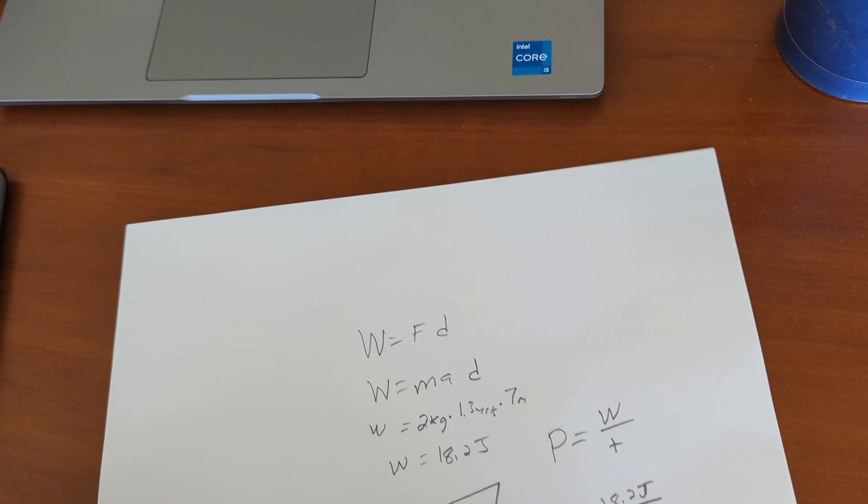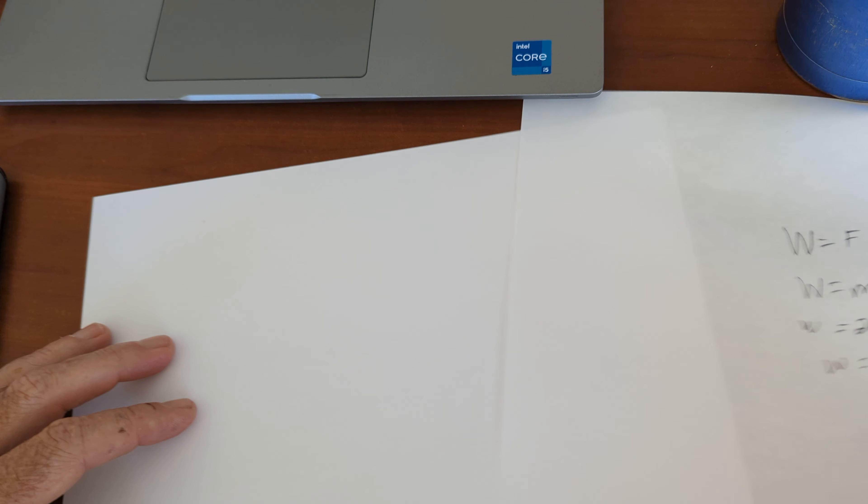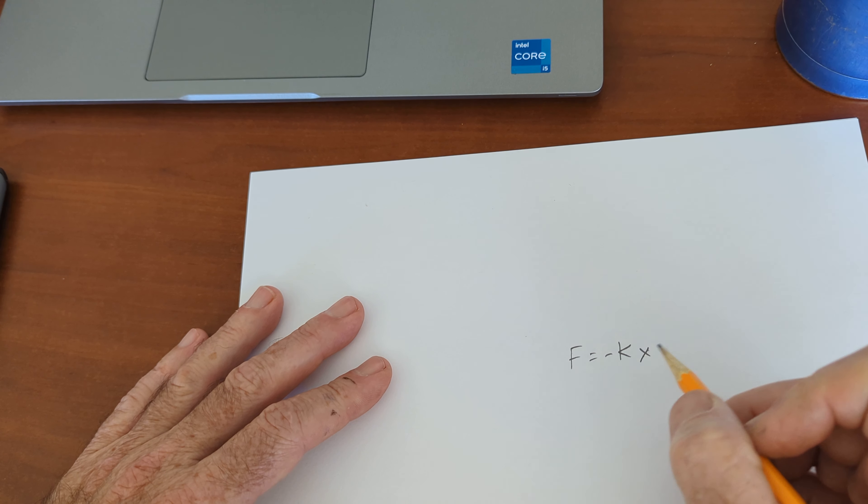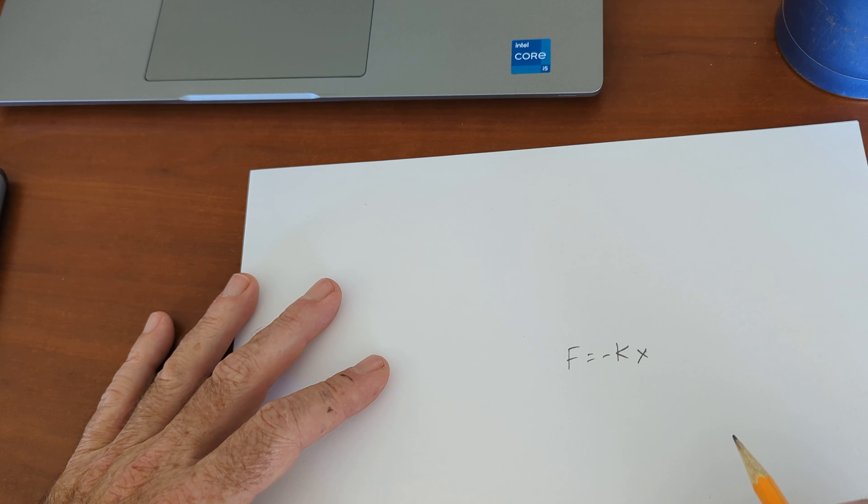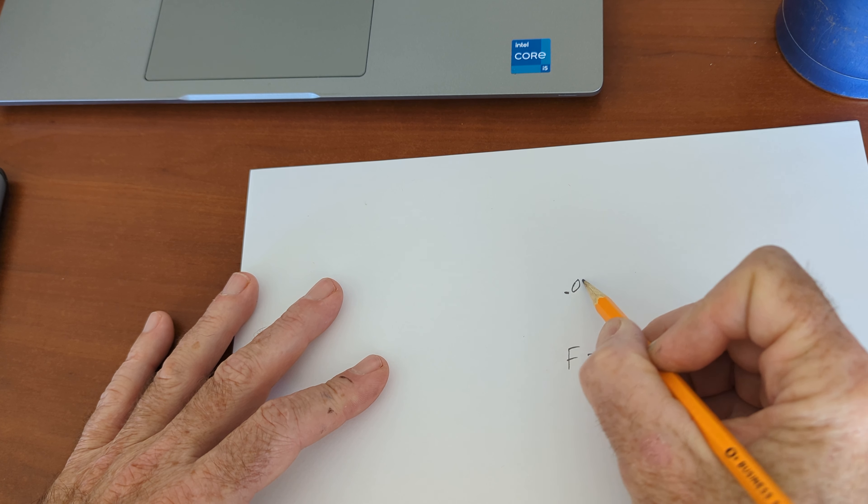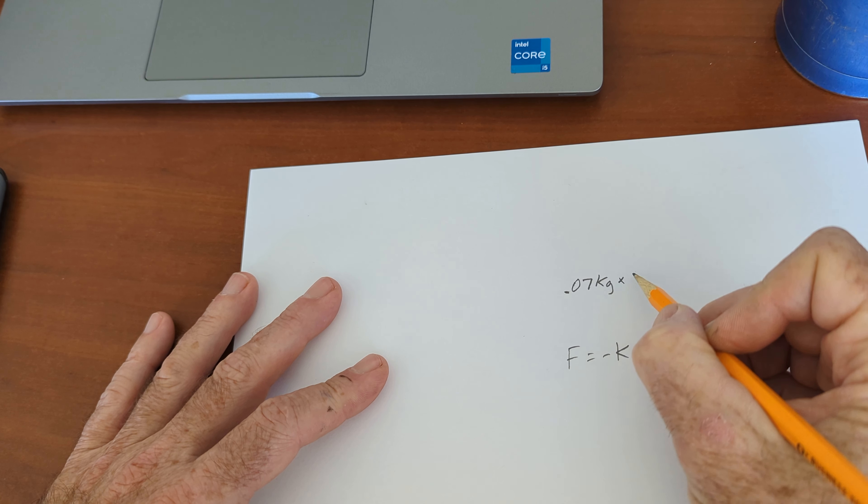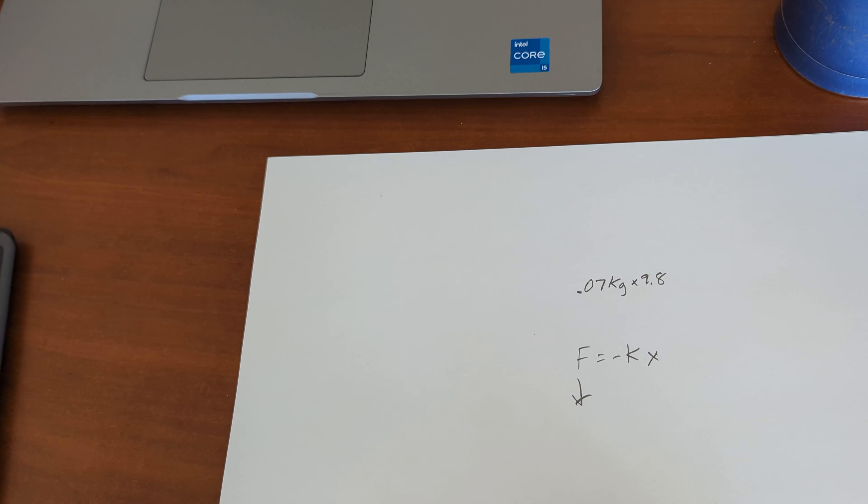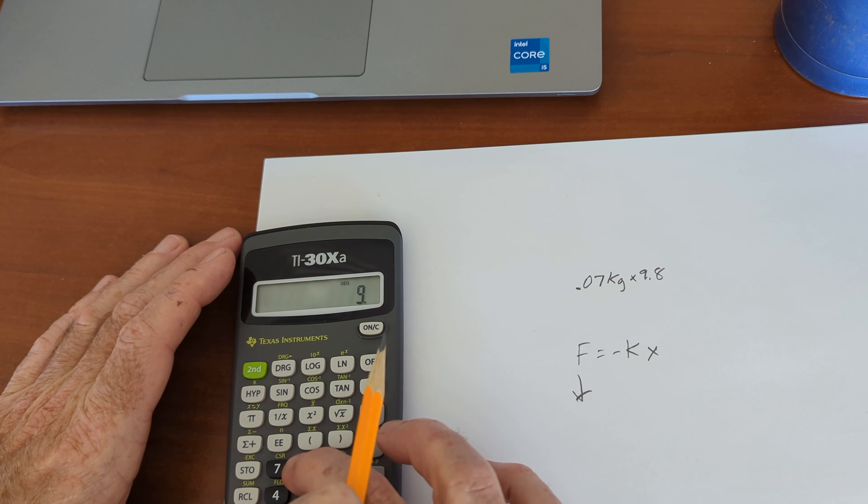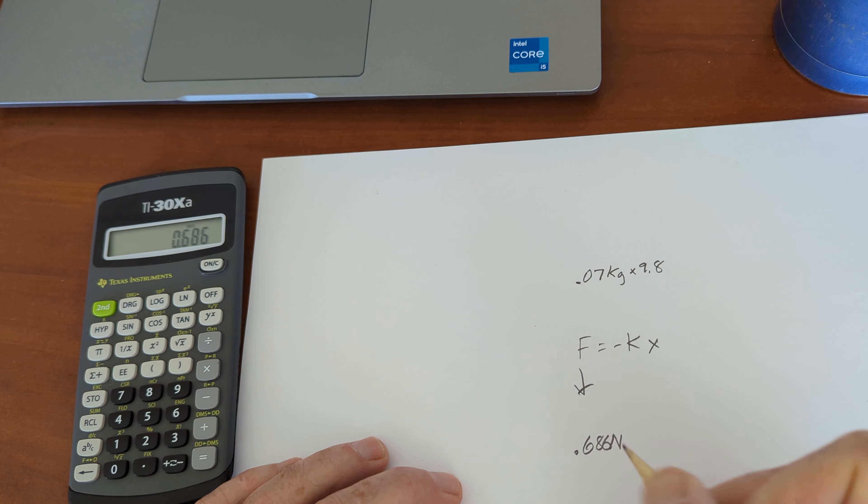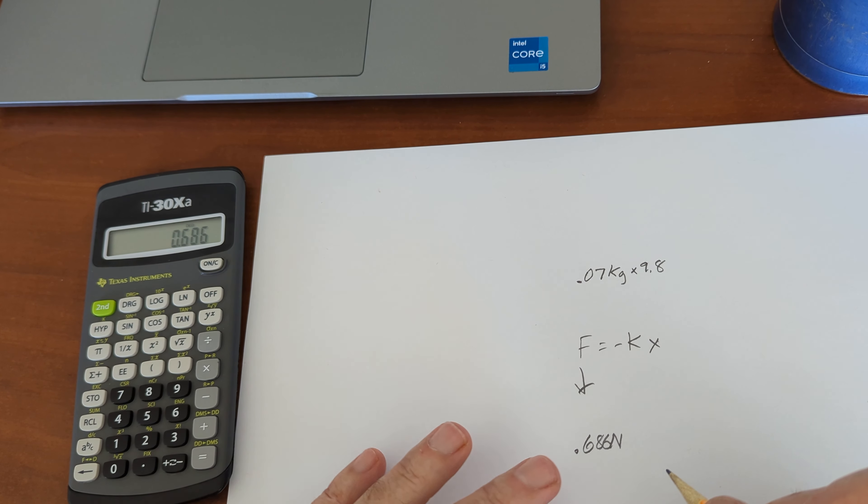Number 11. Calculate the spring constant of that slinky. No problem. F equal negative KX. So, let's see. Force. It's a 70 gram or 0.07 kilograms times 9.8 meters per second. That is the force down that the weight is pulling down on it. So, 0.07 times 9.8 equals 0.686 newtons is how much the thing weighs.